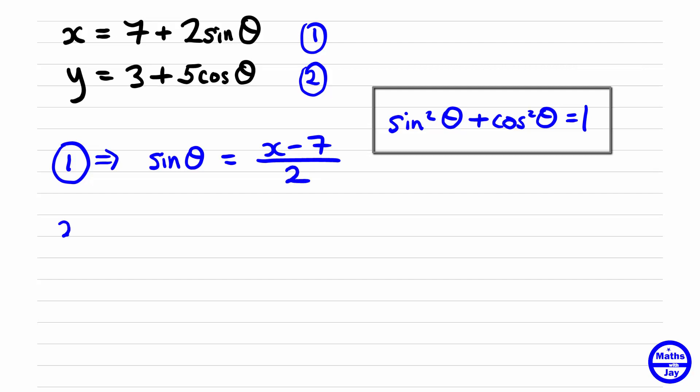And then using equation 2, we can make cos theta the subject. So here we want to subtract 3 from both sides and then divide by 5. And now we're ready to use our identity.